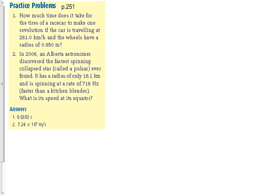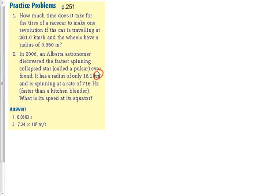In 2006, an Alberta astronomer discovered the fastest spinning collapsed star ever found. It has a radius of only 16.1 kilometers — ridiculously small for a star — and it spins at 716 hertz, which is faster than a kitchen blender. What is the speed at the equator if you were standing on its surface?